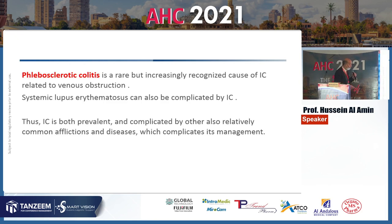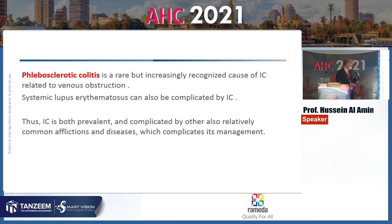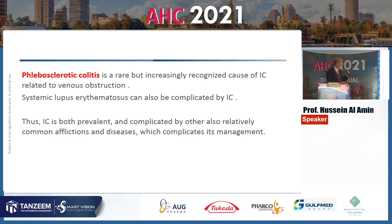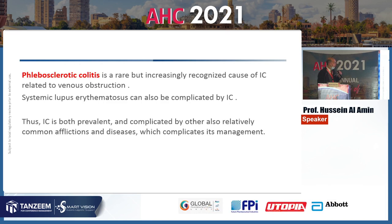Phlebosclerotic colitis is one of the rarest causes of ischemic colitis, recognized in 1991. It may be related to venous obstruction, diabetes, or hepatic disease, and has also been linked to herbal medicine use. It is characterized by calcification of the venous system of the colon. Systemic lupus erythematosus is also an important risk factor, and these underlying conditions affect the management of patients with ischemic colitis.